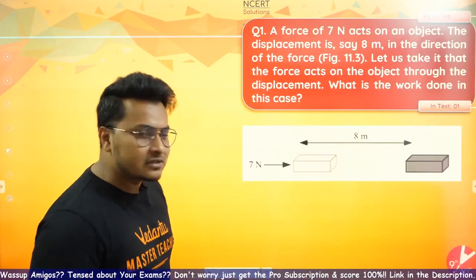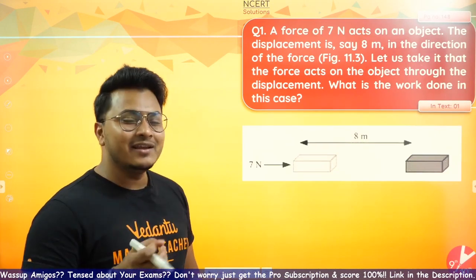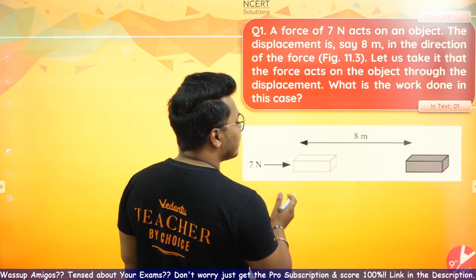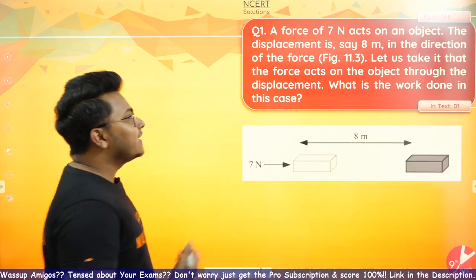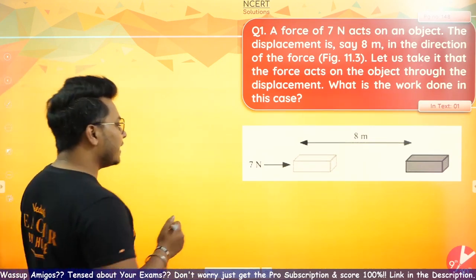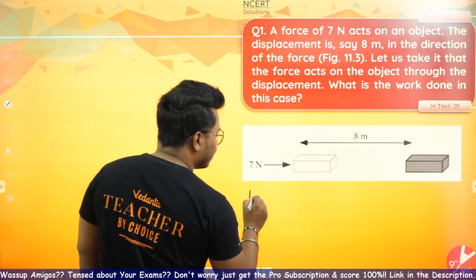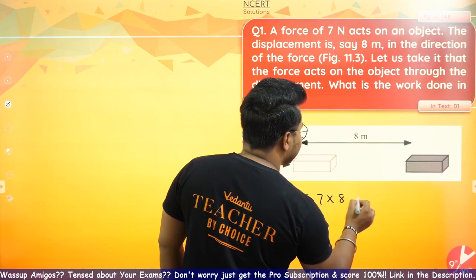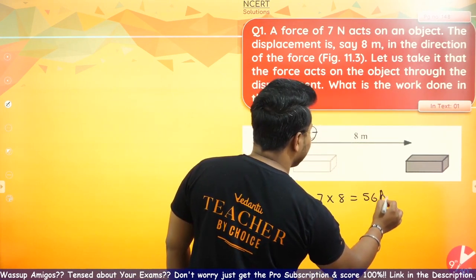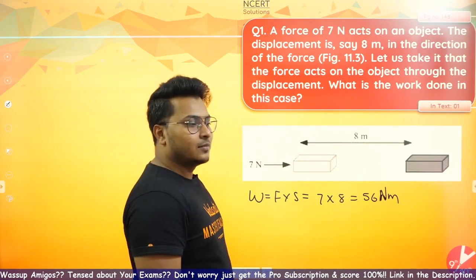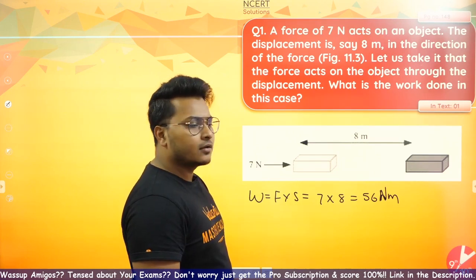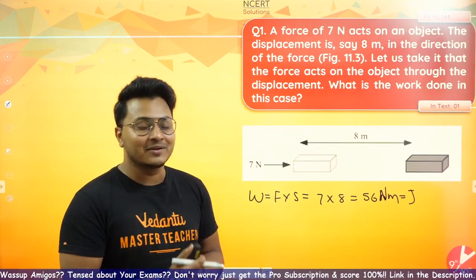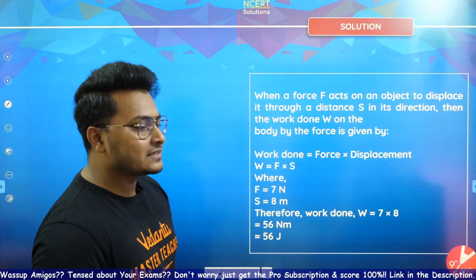Here is the first question. A force of 7 Newton acts on an object with a displacement of 8 meters. Work done is equal to force into displacement. So the answer is 56 Joules — that is the correct answer for the work done. 56 Newton meters or Joules is the correct answer.